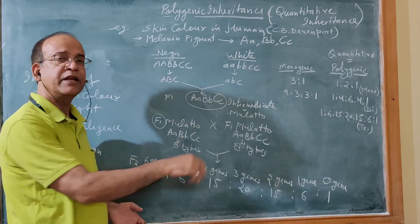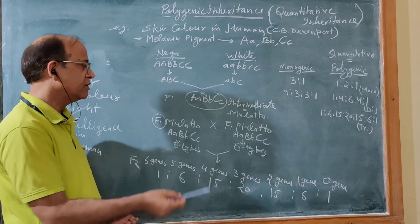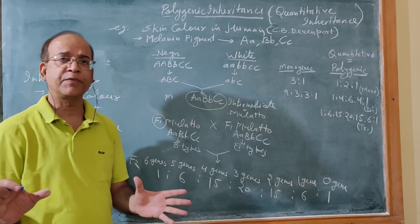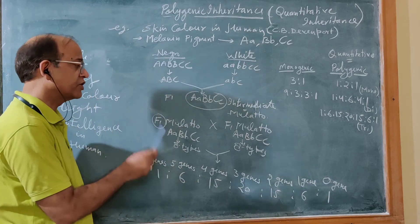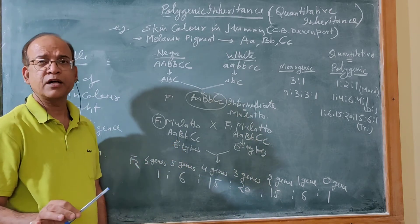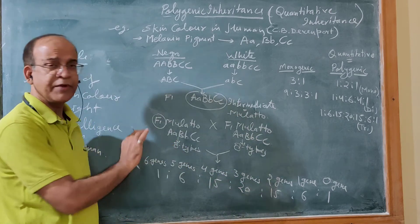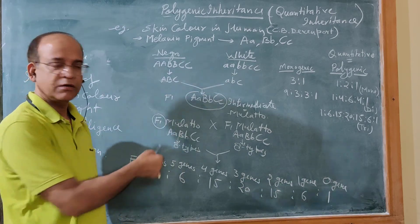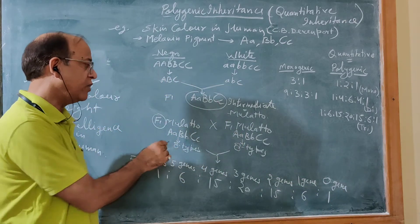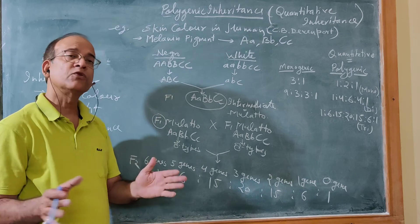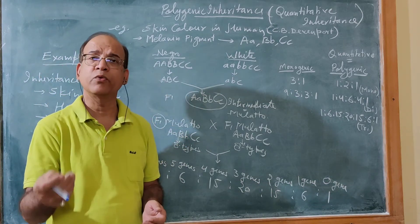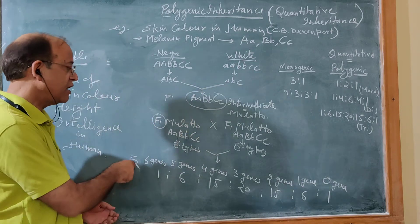If one mulatto marries another mulatto, their genotype is AaBbCc. With three pairs of heterozygotes, eight types of gametes are produced by each parent. So eight times eight gives 64 combinations in F2 generation.